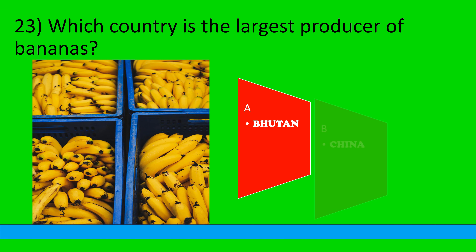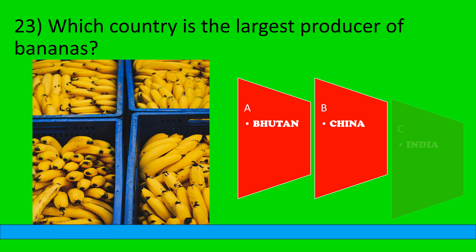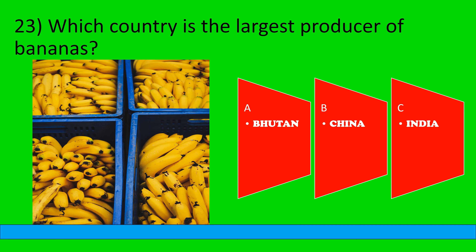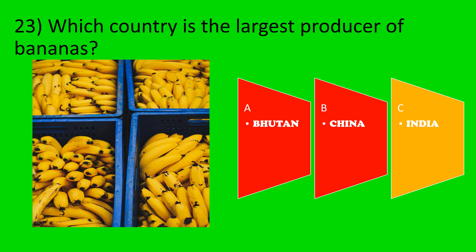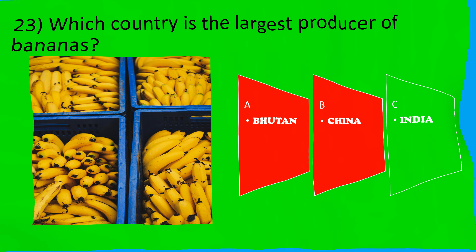Which country is the largest producer of bananas? A: Bhutan, B: China, C: India. The correct option is C, India.